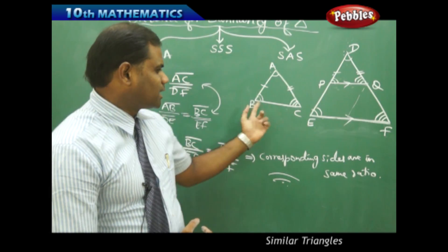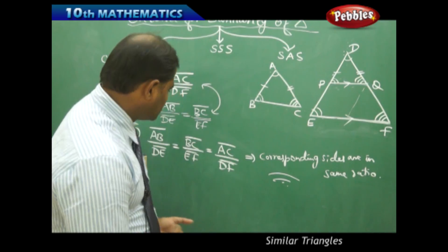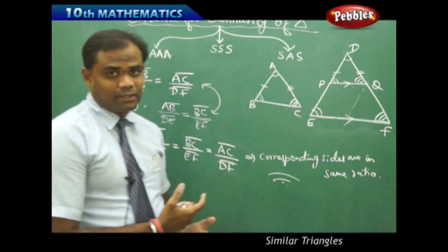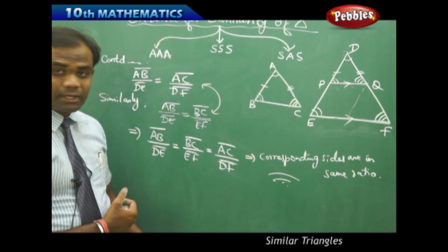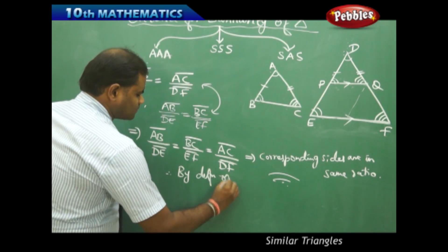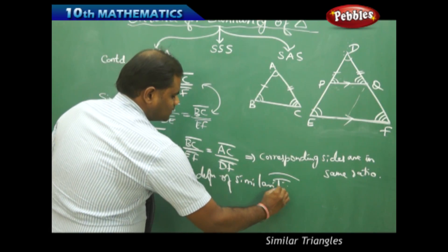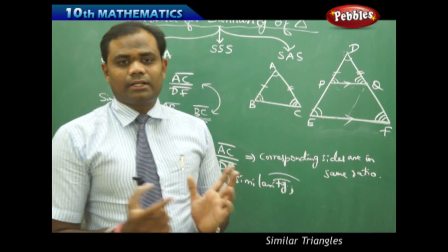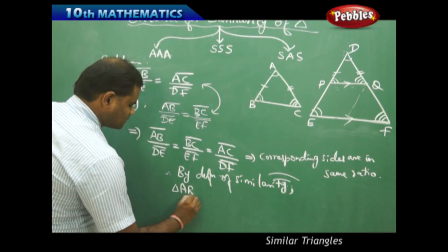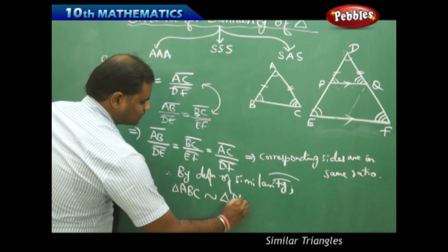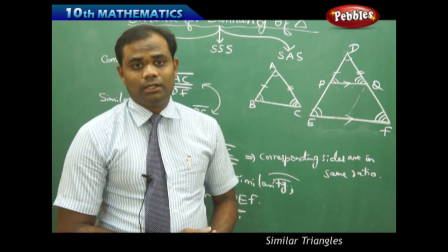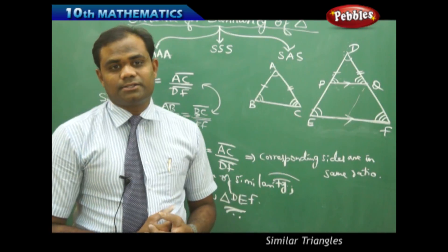Here we understand that if the corresponding angles are equal, then I have proved that from the corresponding angles A equal to D, angle B equal to E, and angle C equal to F, we have proved that the corresponding sides are in the same ratio. Therefore, by definition of similarity, which says that if the corresponding angles are equal and the corresponding sides are in the same ratio, triangle ABC is similar to triangle DEF. The two triangles are similar because their corresponding angles are equal and hence the corresponding sides are in the same ratio.